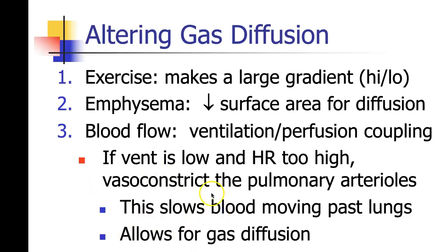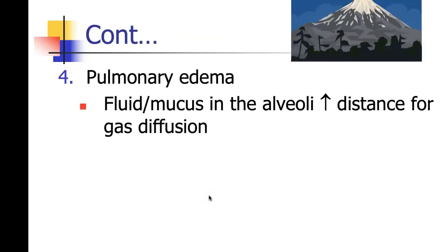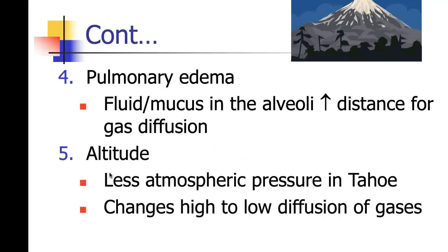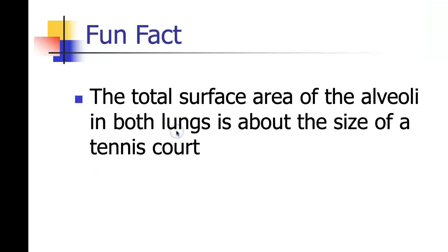The opposite is also true: if ventilation is too high and heart rate is therefore low, you get vasodilation of the pulmonary arterioles. Pulmonary edema can affect this — fluid and mucus in the alveoli increases the distance for gas diffusion making it more difficult. Altitude is a major one too. Tahoe is going to have less atmospheric pressure than San Jose, so we get changes in the high-to-low diffusion of gases. Fun fact: the total surface area of the alveoli in both lungs is about the size of a tennis court — if you reduce this, you get reduced oxygen transfer into your tissues.